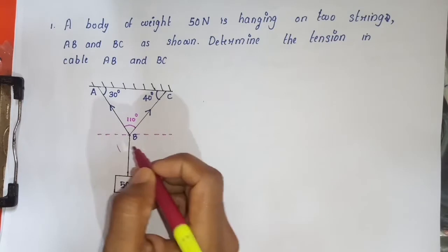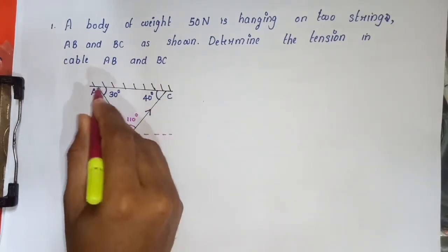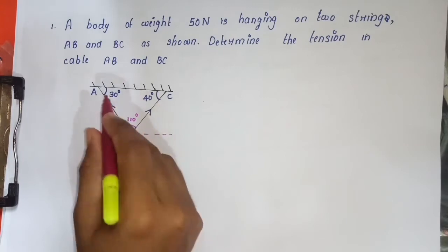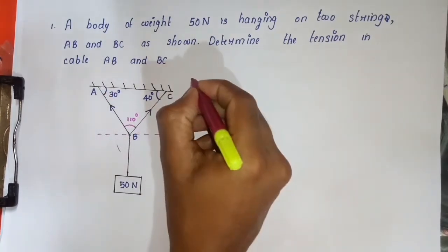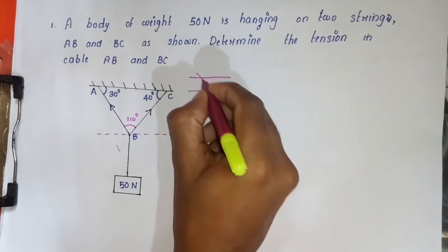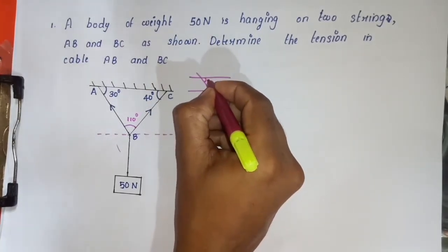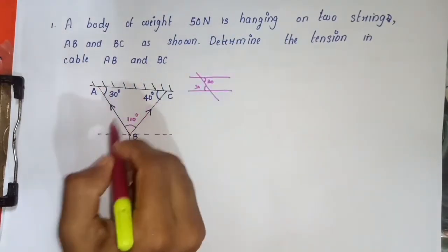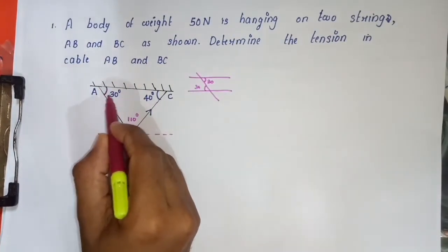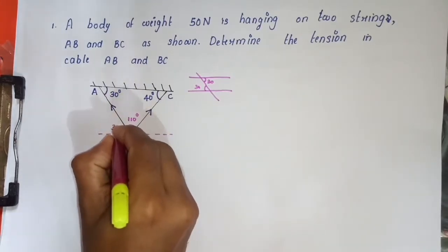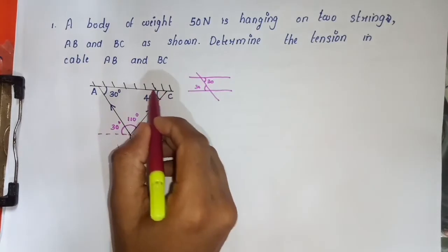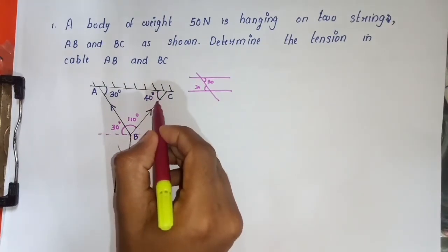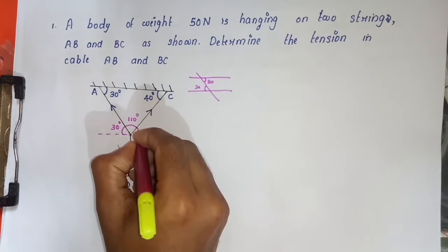Now let's look at the angles relative to the horizontal line. Using the concept of alternative angles — when alternative lines are cut, the alternative angles are equal. So this angle is 40 degrees by the alternative angle concept.